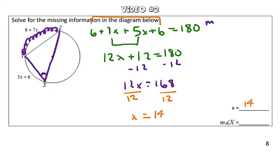To solve for the measure of arc yz, we're going to substitute x into our expression. We have 6 plus 7 times 14. We're going to go ahead and solve this. The measure of arc yz is equal to 104 degrees.